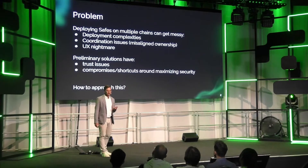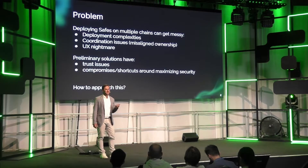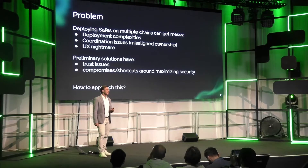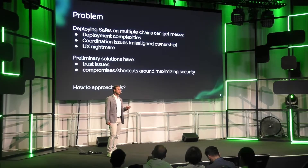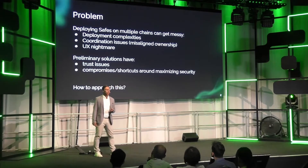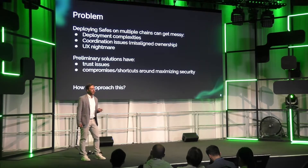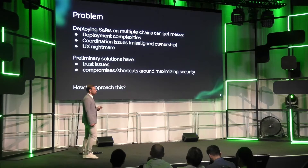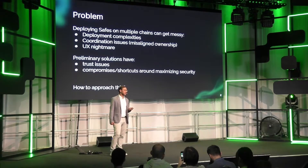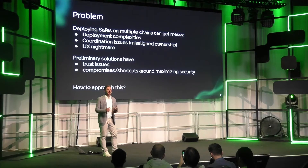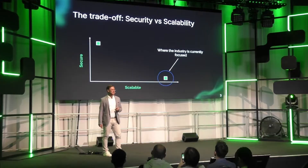Let's look at the problem. Today, Safes often get deployed on more chains, but this is very problematic — first because we may have a different address on different chains, but also simply because the UX is a nightmare. We may end up with a very complex interaction model while holding funds on different chains. How do we circumvent that and protect ourselves from the systemic risks introduced by the trust assumptions of bridges?